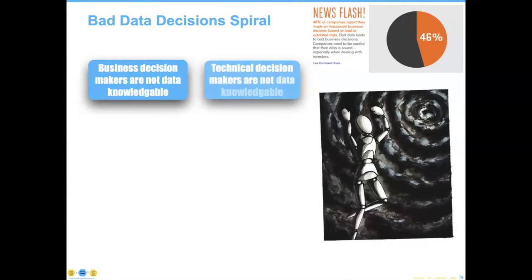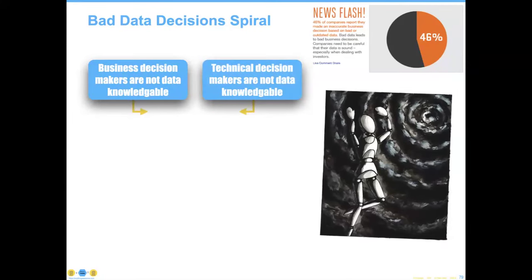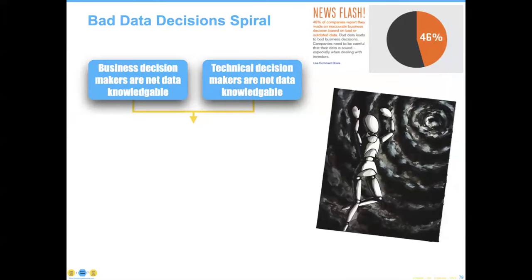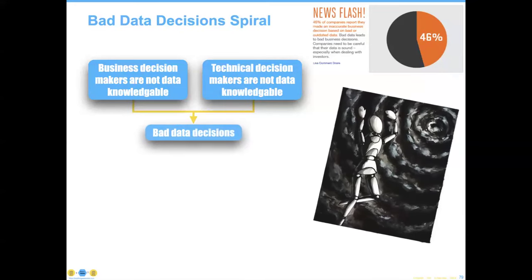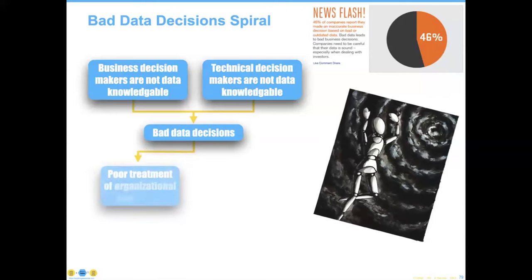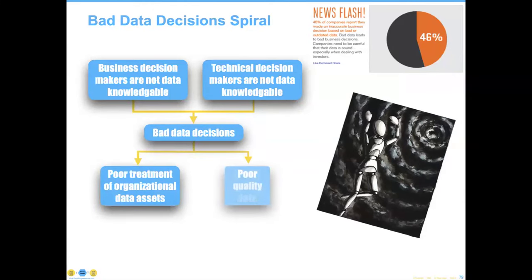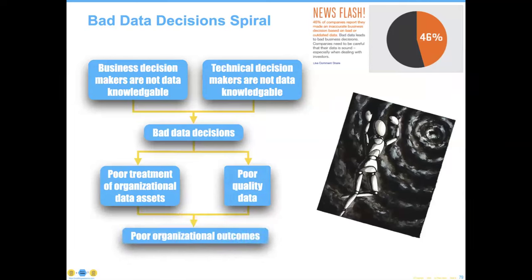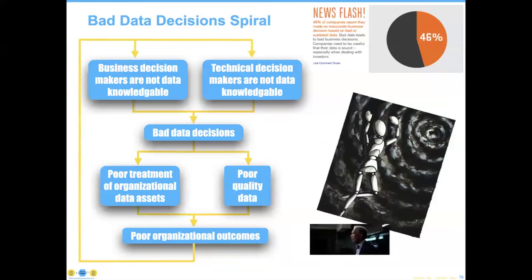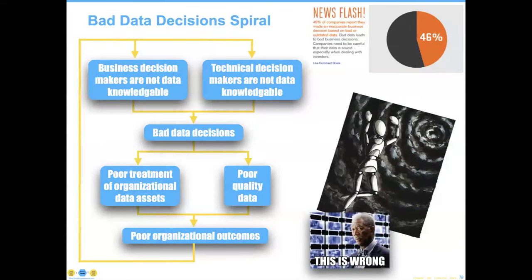Business and technical decision-makers are not data knowledgeable. Therefore, organizations keep making bad data decisions. Those bad data decisions result in poor treatment of organizational data assets and poor quality of data, which result then in poor organizational outcomes. We get into the cycle: how do we get out of this bad data cycle? This is wrong.